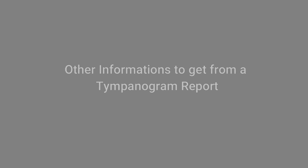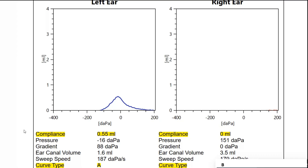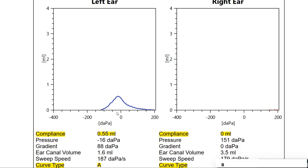Now let's analyze a tympanogram report and what other information you can get from it. The report includes: compliance, pressure, gradient, air canal volume, sweep speed, and graph type. Here the compliance is 0.55 ml — absolutely normal, as normal compliance is 0.3 ml to 1.5 ml. The pressure here is minus 16 daPascal, which corresponds to the peak position. Normal middle ear pressure is from minus 100 daPascal to plus 50 daPascal, so pressure is also normal.